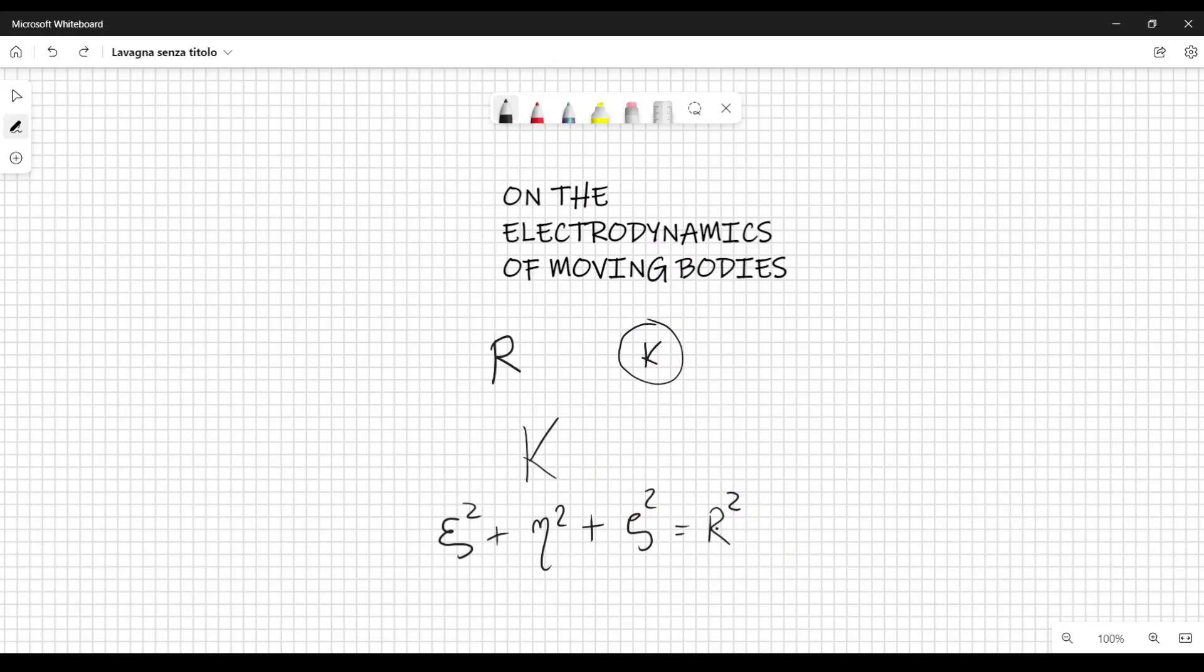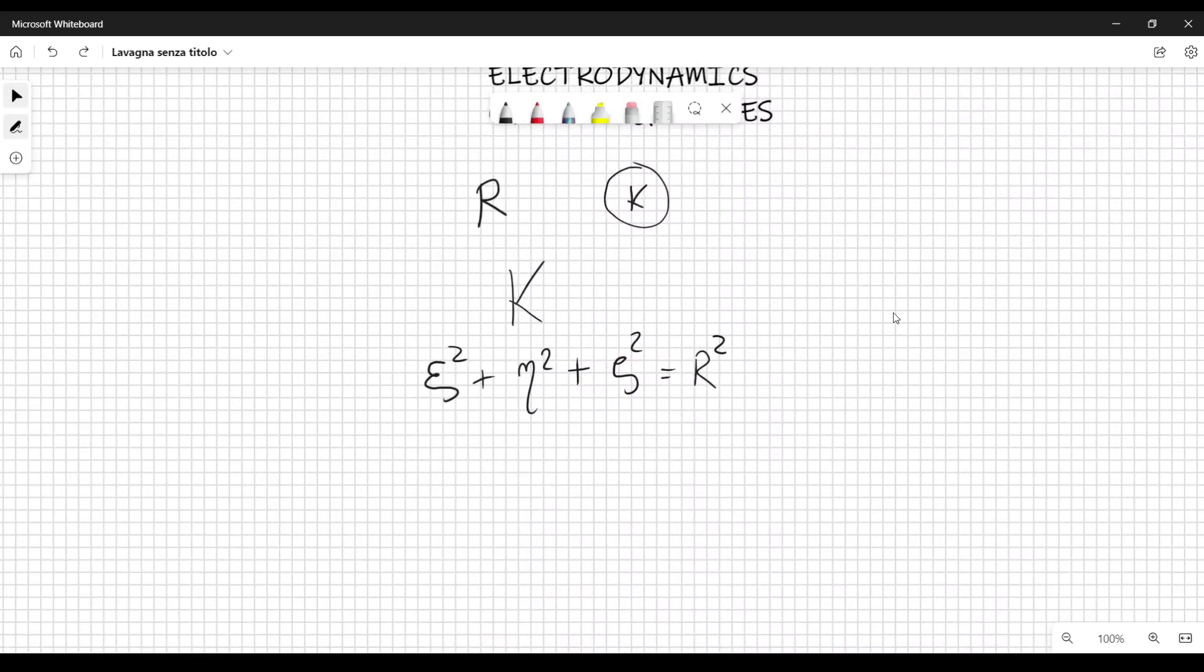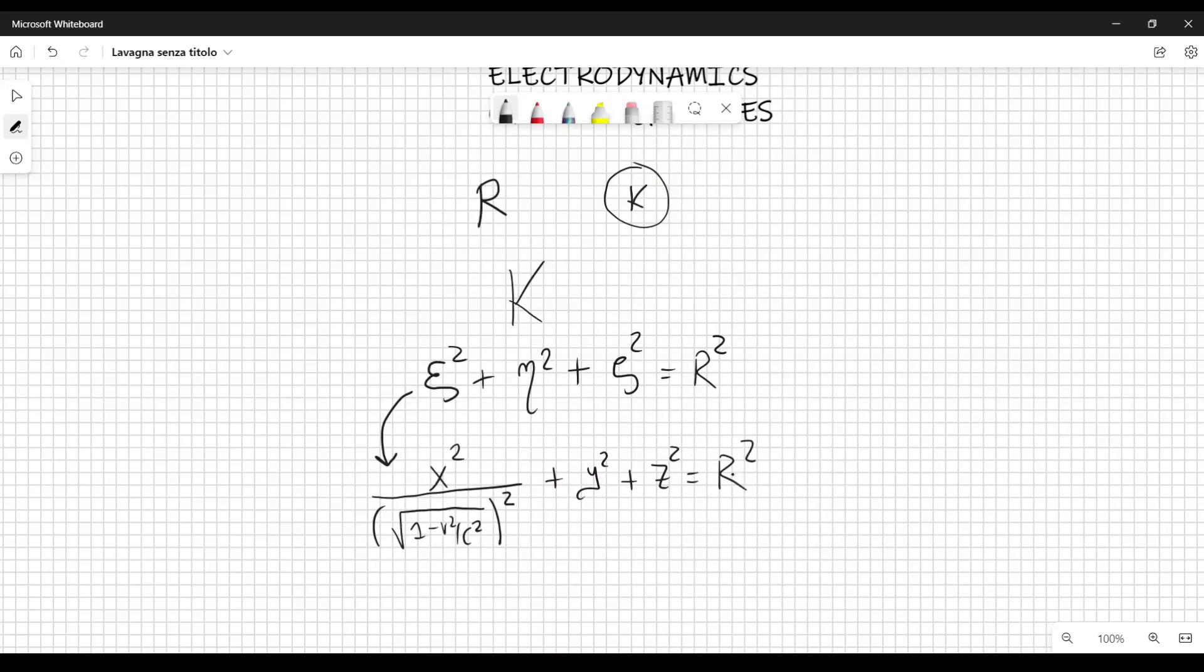I'm not going to explain the meaning in this lecture as well. Now, I will take for granted the Lorentz transformations that we derived in the previous video. If we express the equation of this surface by using x, y, z at the time t = 0, by using Lorentz transformations, it is very simple to see that this equation becomes x²/(√(1 - v²/c²))² + y² + z² = R².